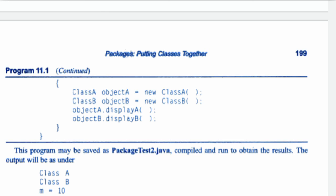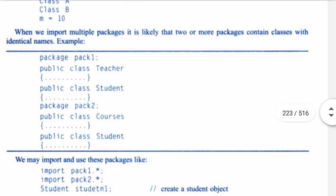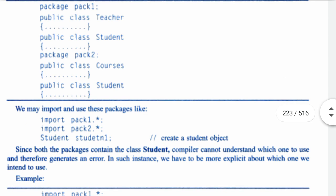This program may be saved as PackageTest2.java, compiled, and run to obtain the results. When we import multiple packages it is likely that two or more packages contain classes with identical names. For example, we may import and use these packages like: import pack1.*; import pack2.*; student s1; Since both packages contain the class Student, the compiler cannot determine which one to use and therefore generates an error.